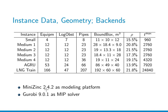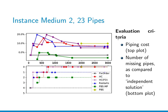We use MiniZinc 2.4.2 as the modelling environment and the MIP solver GUROBI 9. For measuring algorithm performance we look at two criteria: the total piping cost, and — probably even more important — the number of successfully routed pipes, expressed as the number of missing pipes relative to the independent solution, where each pipe is routed individually and optimally.